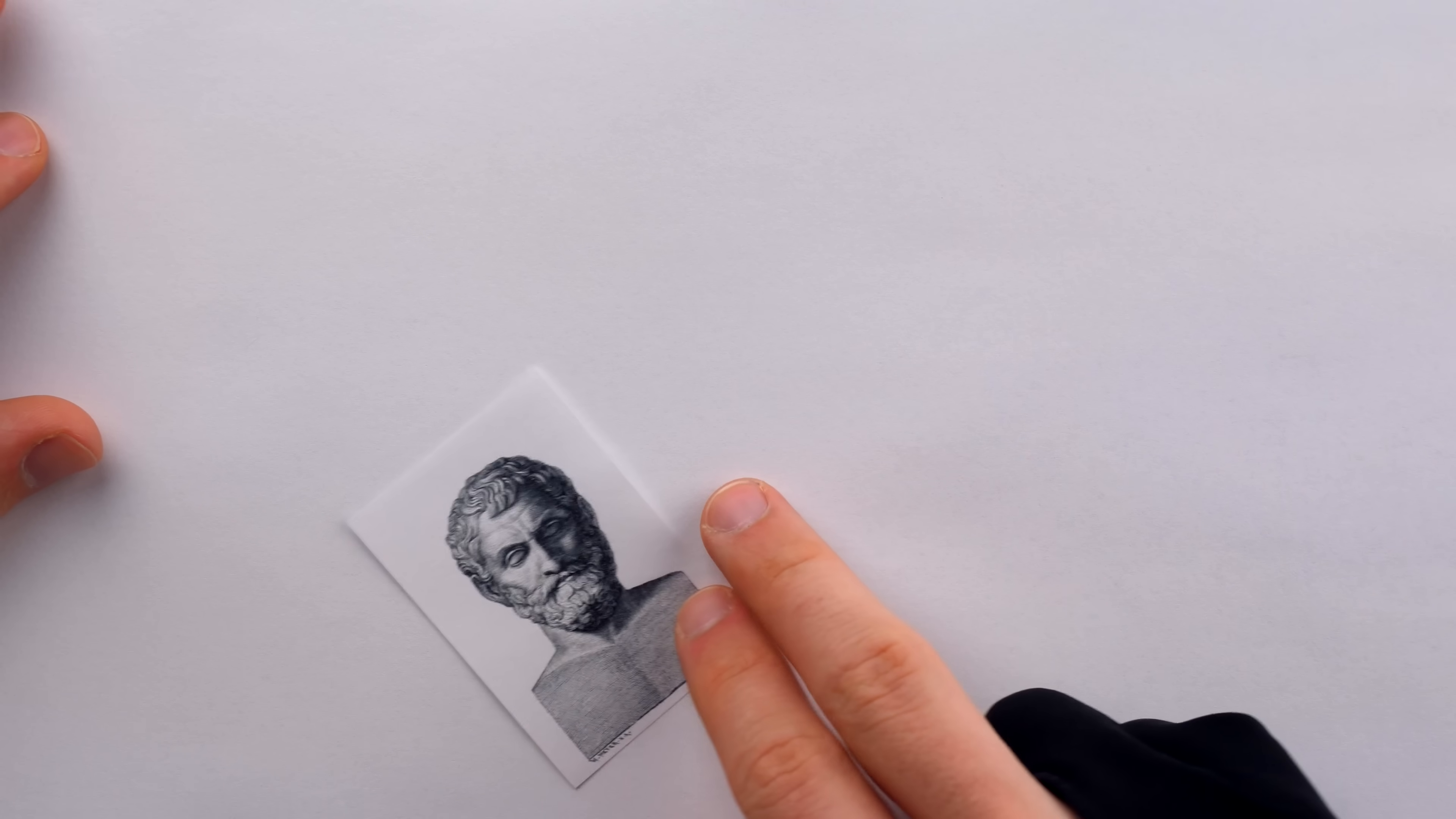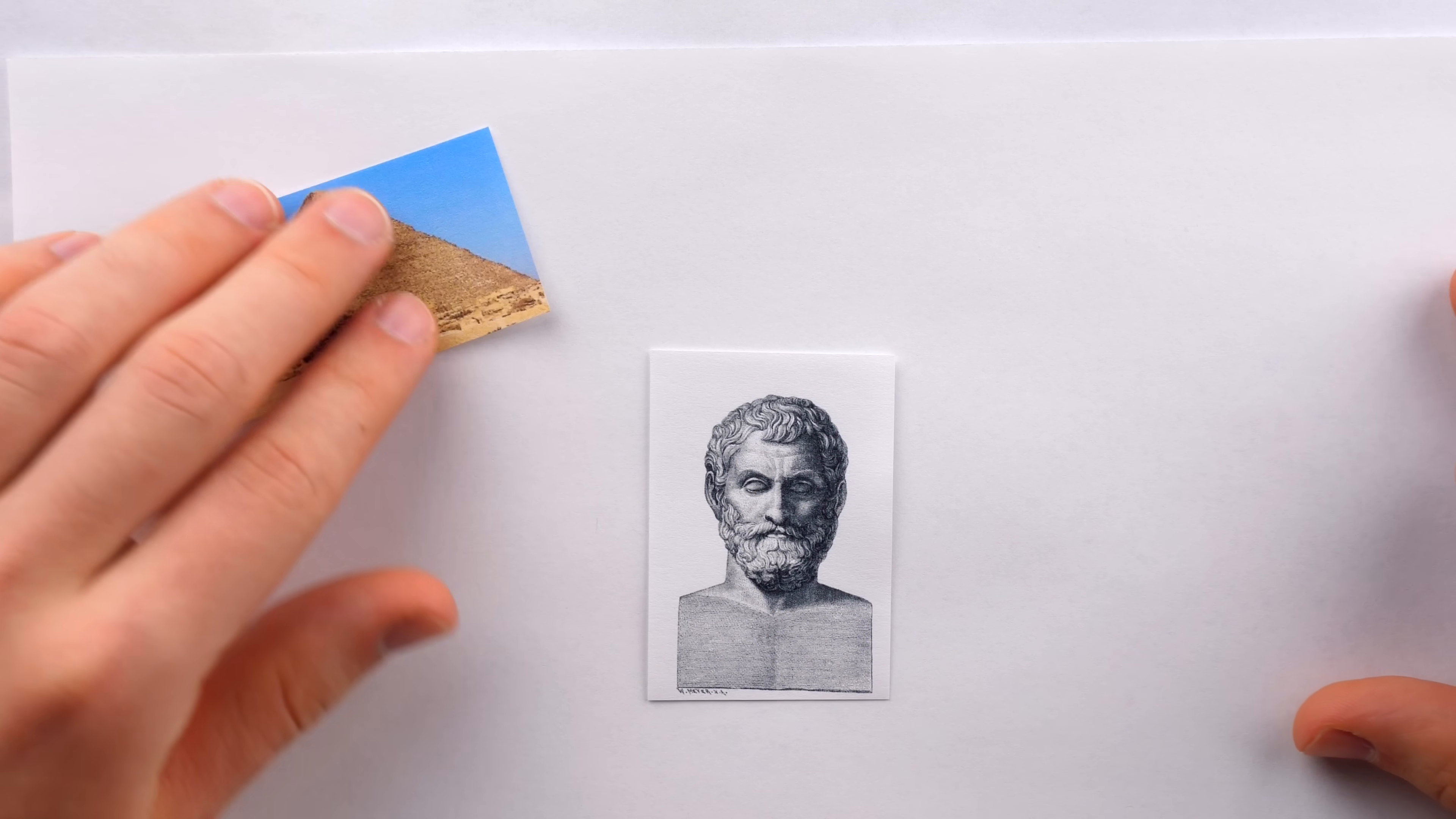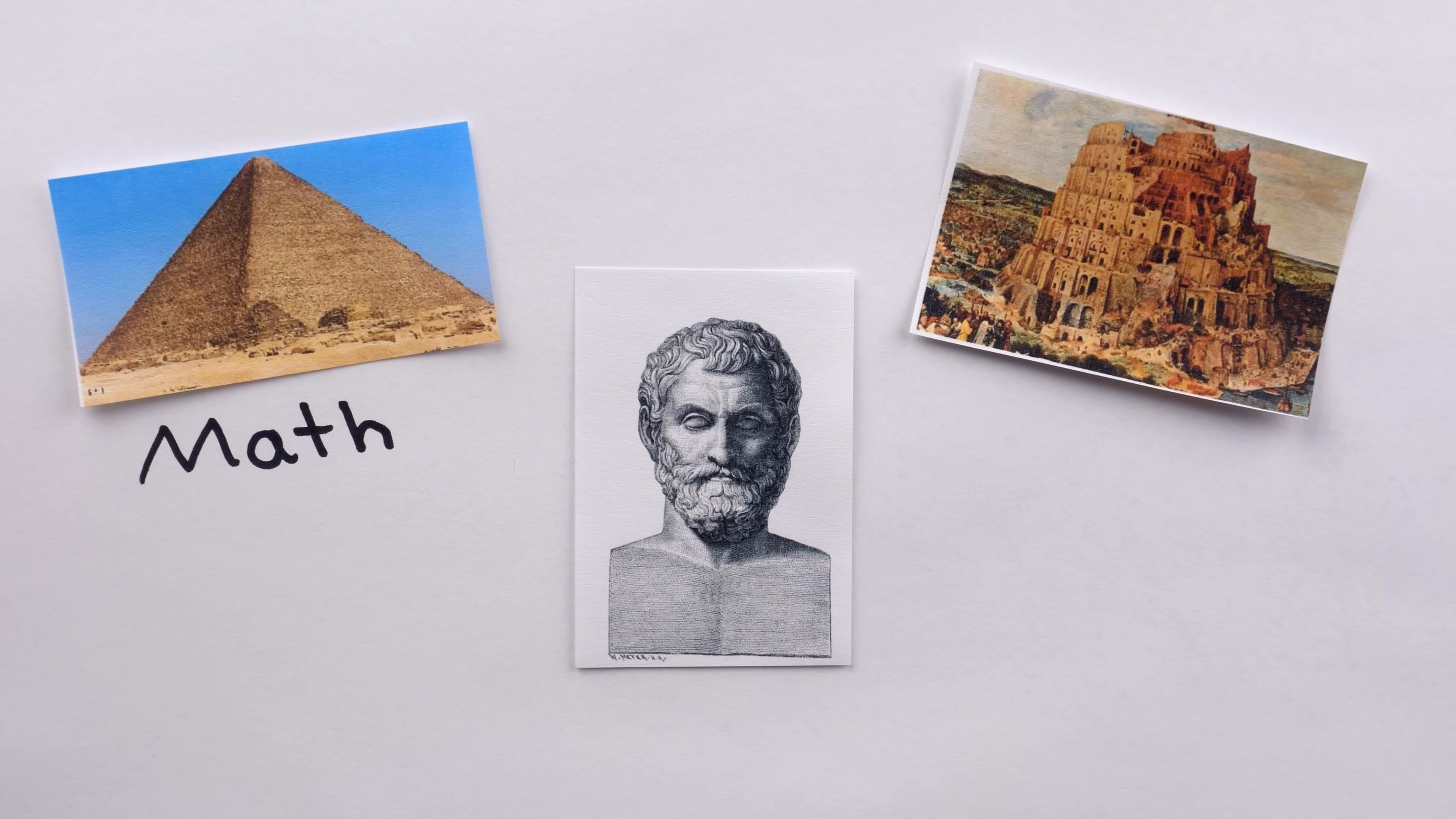Thales spent his early years engaged in commercial ventures, and it is supposed that during his travels he learned mathematics from the Egyptians and learned astronomy from the Babylonians.